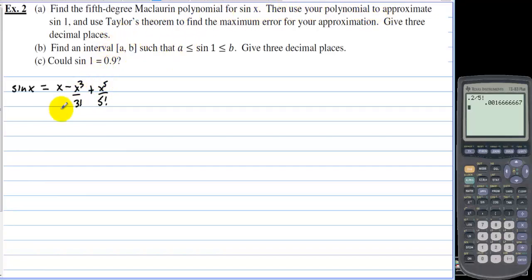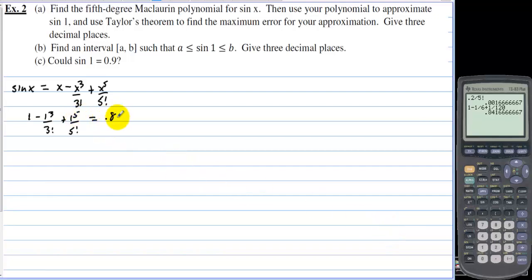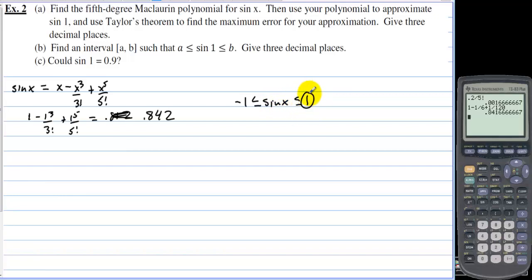Using the polynomial to approximate sin(1): we have 1 − 1³/3! + 1⁵/5! = 1 − 1/6 + 1/120 ≈ 0.842. For the maximum error, since sin(x) is between −1 and 1, the maximum value M equals 1.